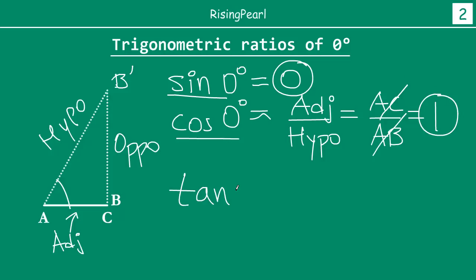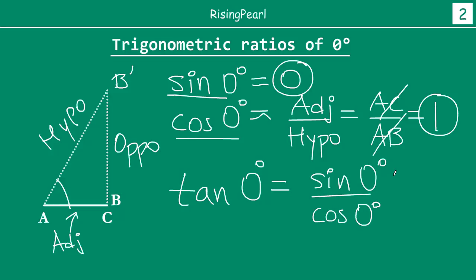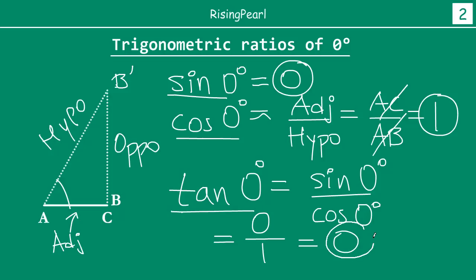Now let's find tan zero degrees. Tan of any angle is sine of that angle divided by cosine of that angle. So tan zero degrees equals sine zero degrees divided by cos zero degrees. Sine zero degrees is zero and cos zero degrees is one. Zero divided by any number is zero, so tan zero degrees is zero.